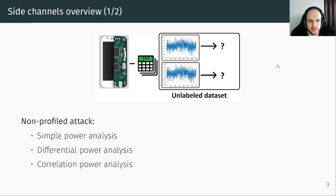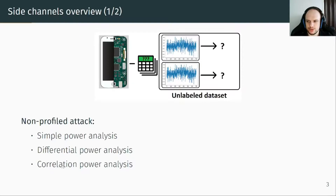First, the attacker can acquire an unlabeled dataset. An unlabeled dataset is a dataset composed of a set of traces without acknowledging or having the corresponding key or intermediate target value. When an attacker has an unlabeled dataset, he can perform a non-profile attack. The non-profile attack consists in using some statistical tools and some knowledge to discover the key — for example, using correlation or the difference between two sets of traces.